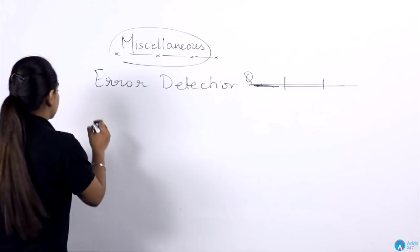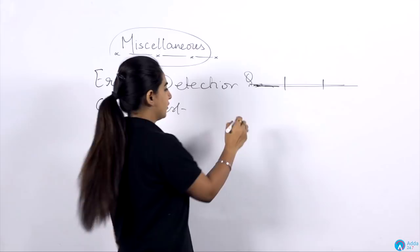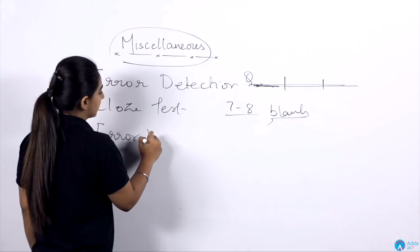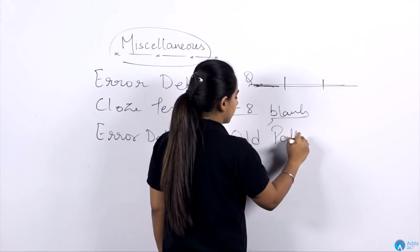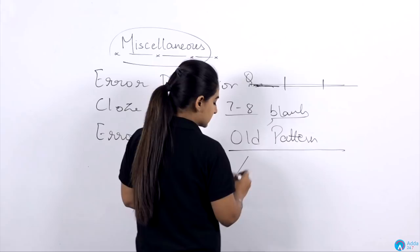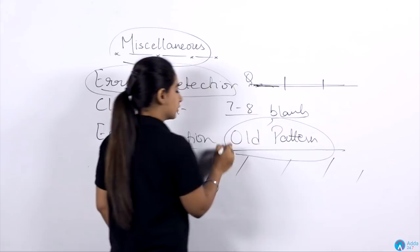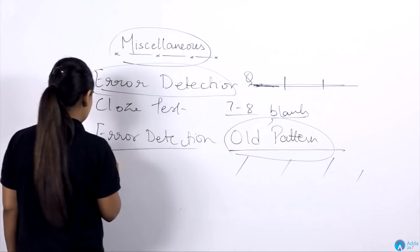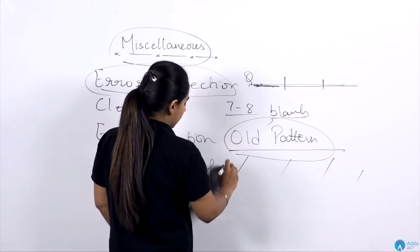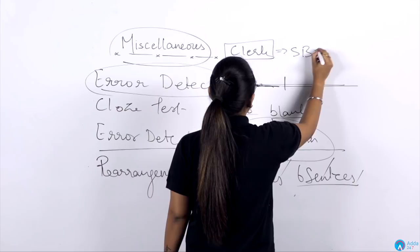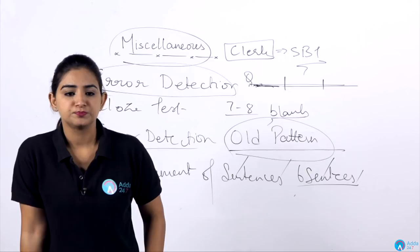Then we'll solve a cloze test — not ten marks, but seven to eight blanks. It will be of clerk level. And last will be again error detection, but that will be of old pattern — the slash-based questions we classify as old pattern. After that, error detection in different patterns, then a cloze test, and we will also solve a rearrangement of six sentences. Everything will be of SBI clerk level.